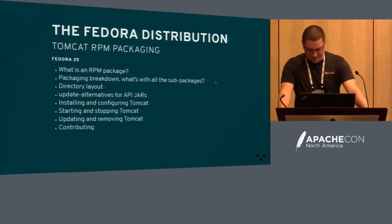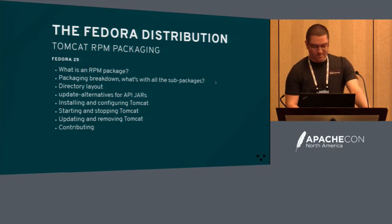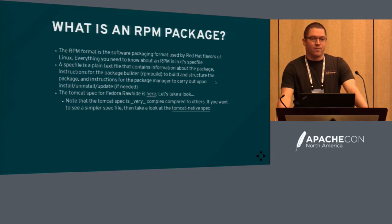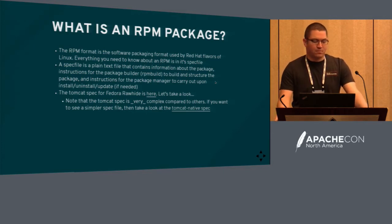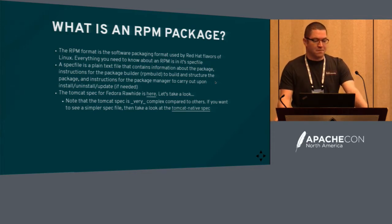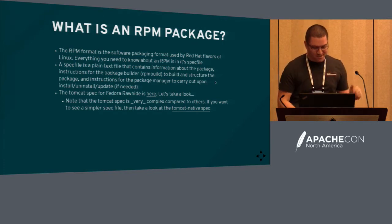Now Fedora packaging. The RPM format is what Red Hat flavors of Linux use — Fedora, Red Hat Enterprise Linux, CentOS. Everything you need to know about an RPM is defined in the spec file, and the spec file is used to build the RPM package or packages. In the case of Tomcat, it has a parent package and then there are a whole bunch of subpackages underneath.